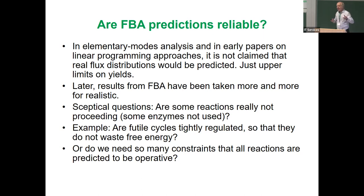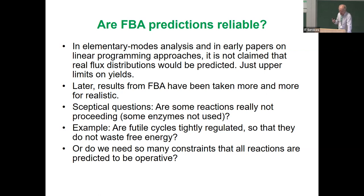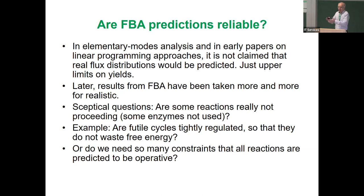By elementary modes you can also calculate suboptimal yields — the second best, third best, and so on. Neither in elementary mode analysis nor in the early linear programming papers was it claimed that real flux distributions would be predicted — just upper limits. Over time, FBA results were taken more and more as predictions of the living cell, and there I have some skeptical questions.